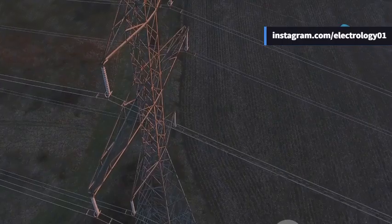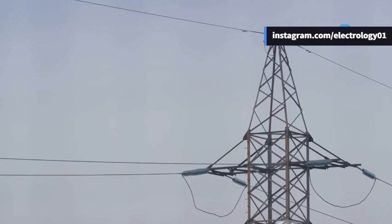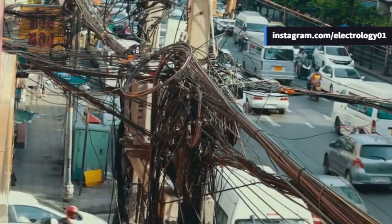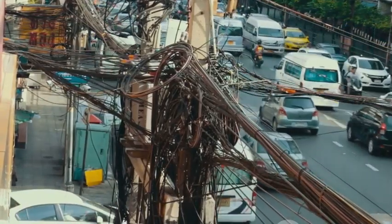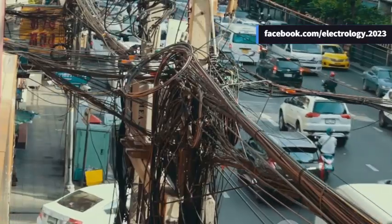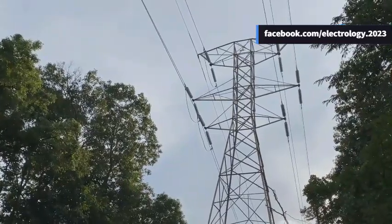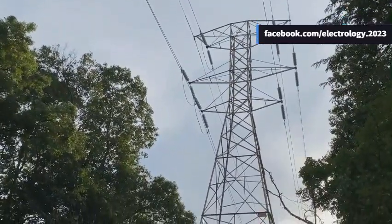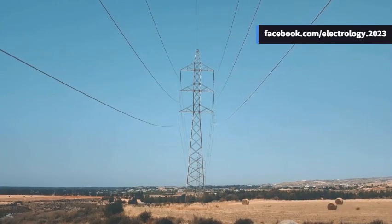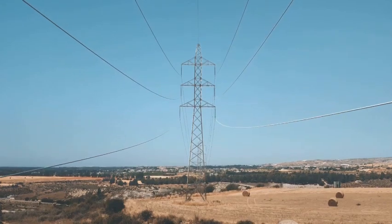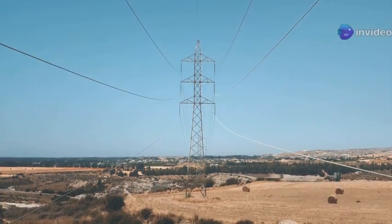Without transposition, the line with the highest inductance would carry less current, and this leads to unequal loading of the transmission line. Moreover, unbalanced lines act as antennas and induce voltages into nearby telephone or signal lines, causing noise and signal distortion. By transposing the conductors, we eliminate this interference by canceling out the magnetic coupling over each section. This is why you'll often find transposition practiced more in long distance and rural areas where communication lines run parallel to power lines.